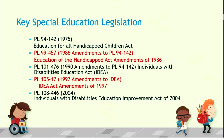Laws enacted by Congress have an expiration date, so if a law is not a good one, it just goes away. If it is a good law, it's most often reauthorized, and that's been the case with 94-142. The first reauthorization was in 1986 as Public Law 99-457, commonly called the Education of the Handicapped Act Amendments of 1986.